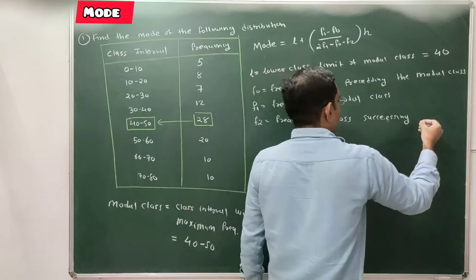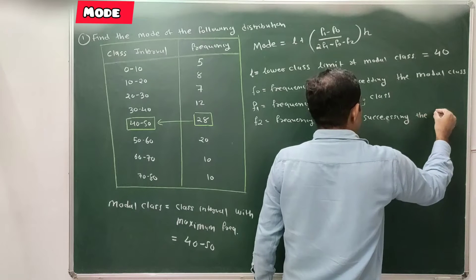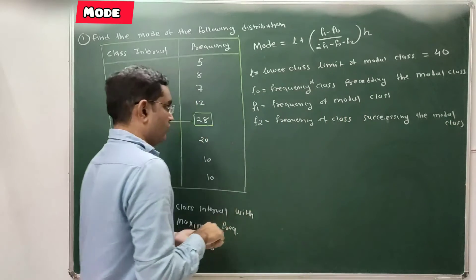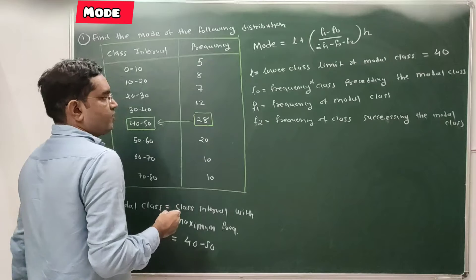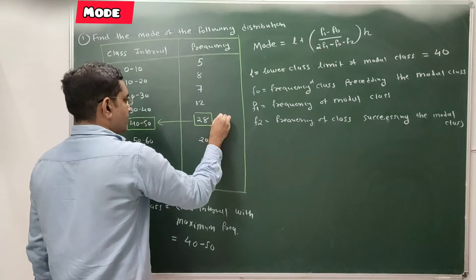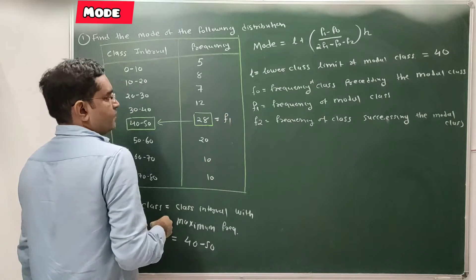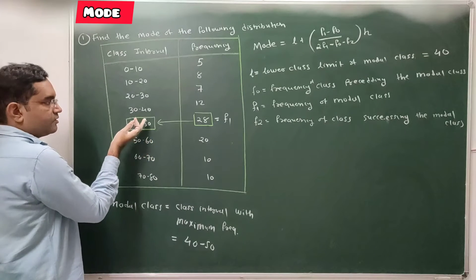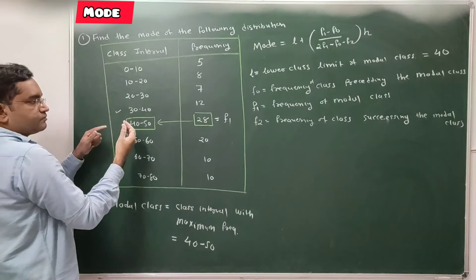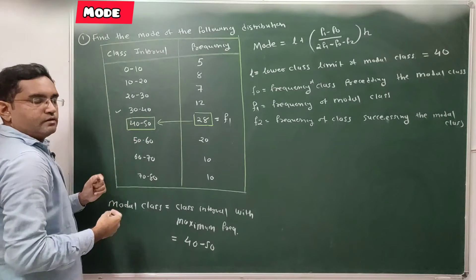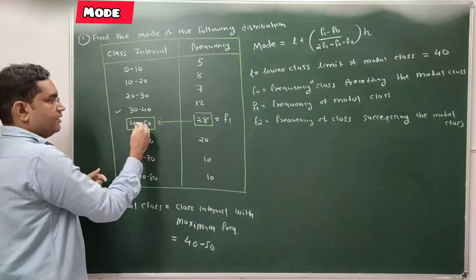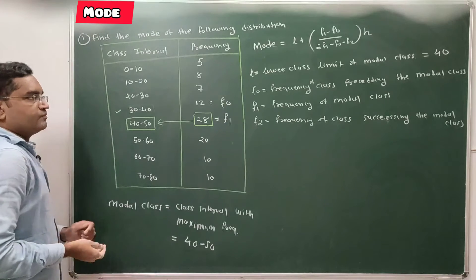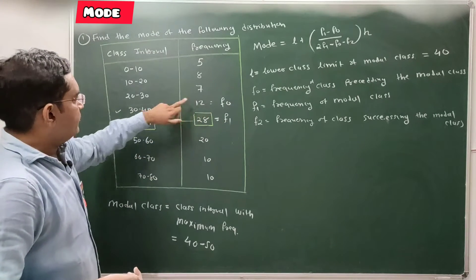f2 is the frequency of the class succeeding the modal class. Our modal class is 40 to 50. The class preceding it is 30 to 40, whose frequency is f0.